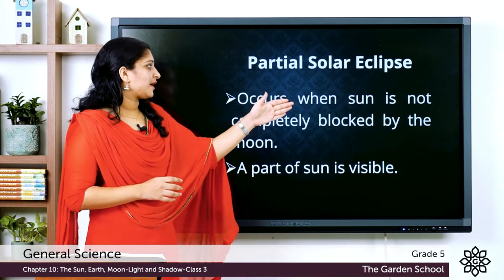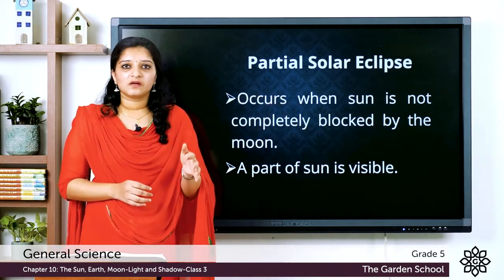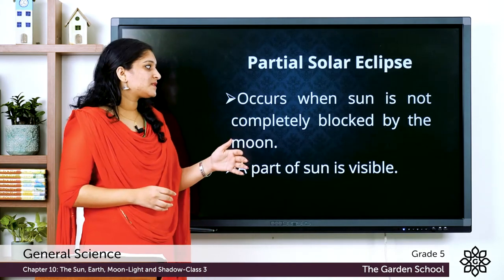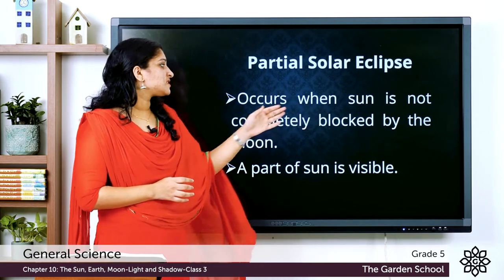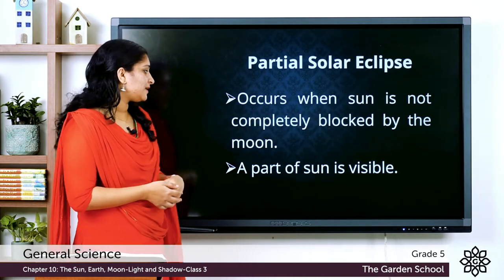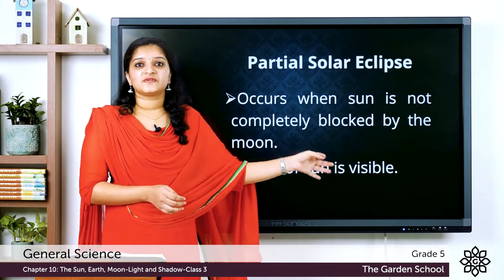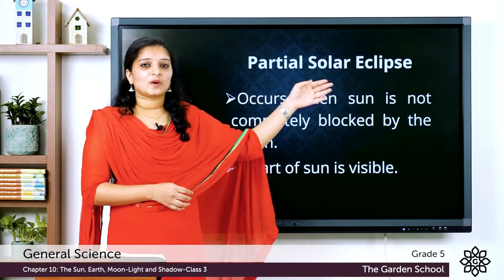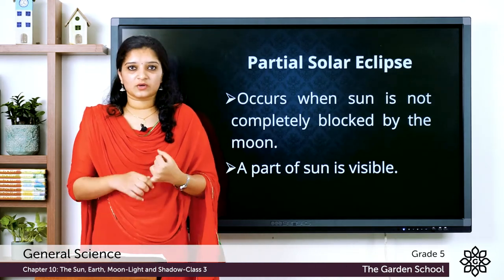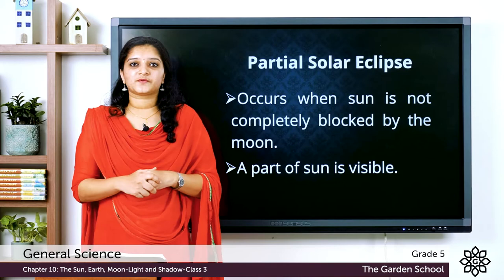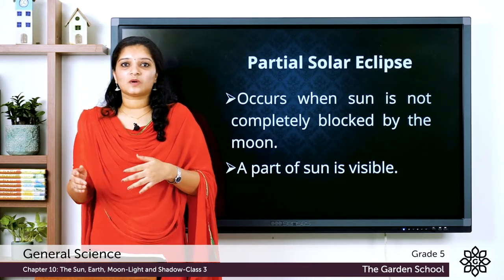In a partial solar eclipse, the Sun is not completely blocked by the moon. While in a total solar eclipse the Sun is completely blocked, in a partial solar eclipse the Sun is not completely blocked and a part of the Sun is visible. In a partial solar eclipse, the Sun is partly visible to humans. So we have learned the two types of solar eclipse: the total solar eclipse and the partial solar eclipse.